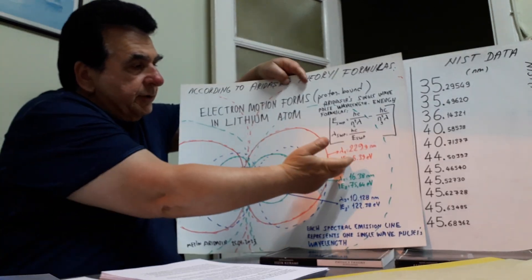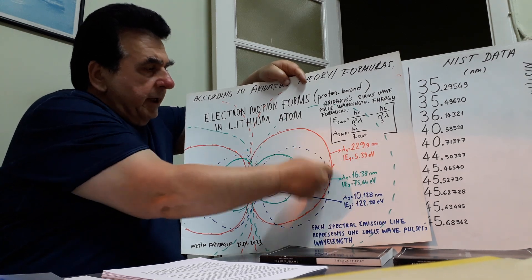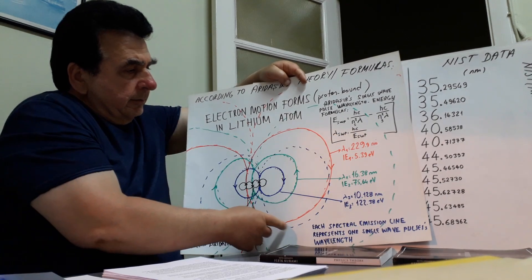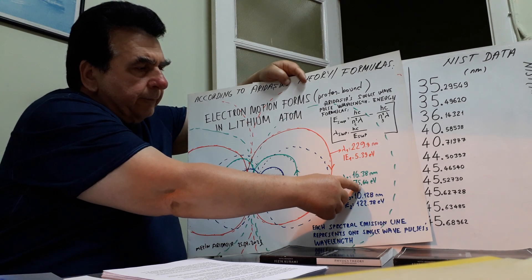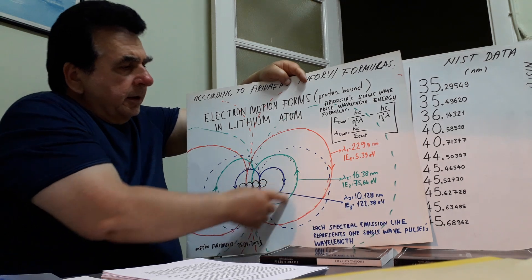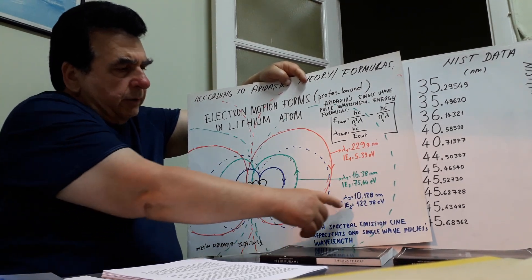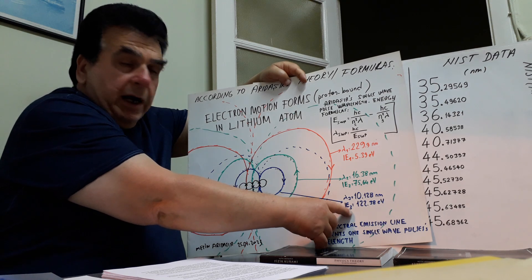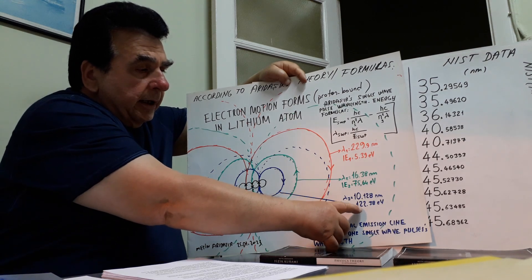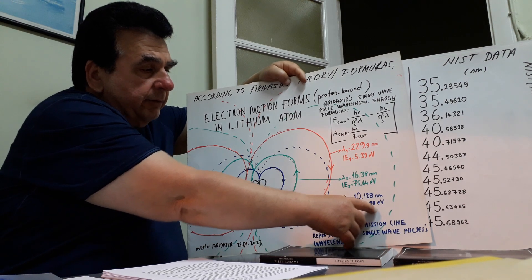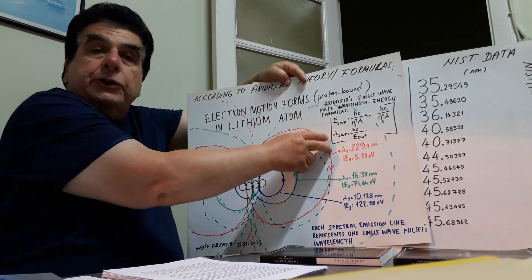For lithium: ionization energy 1 is 5.39 eV, corresponding wavelength 229.9 nanometers. Ionization energy 2 is 75.64 eV, corresponding wavelength 16.38 nanometers. The highest ionization energy corresponds to the smallest electron: 122.38 eV, wavelength 10.14 nanometers. These are different nodes.